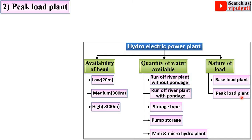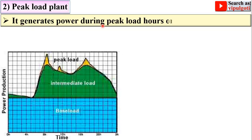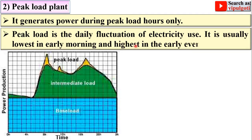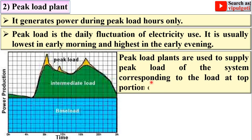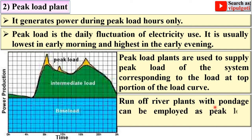The last type is the peak load plant, which generates power during peak load hours only. Peak load is a daily fluctuation of electricity use — usually lowest in early morning and highest in the early evening. Peak load plants supply peak load corresponding to the top portion of the load curve. Runoff river plants with pondage can be employed as peak load plants.